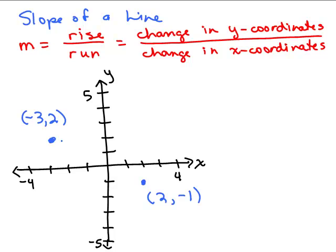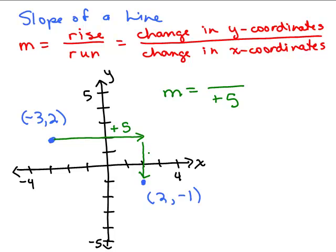For instance, if I wanted to find the slope of the line that passes through these two points, let's see how we would get from one point to the next. I could move to the right — that will be my run. One, two, three, four, five spaces to the right, so our run is positive five. Then we're going to move down one, two, three spaces, so I'm saying negative three.